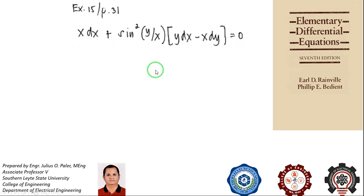So we will do only one substitution. It's either x equal to vy or y equal to vx. But sometimes the substitution is being suggested by the equation.